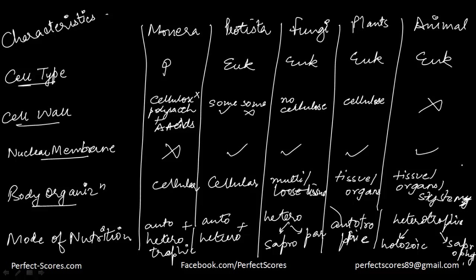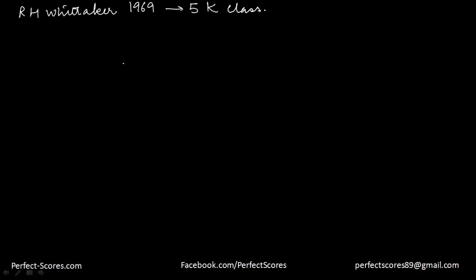You can pause this video and revise them once again. Now, who was the person responsible for the five kingdom classification? That was R. H. Whittaker. In the year 1969, he proposed the five kingdom classification. He thought that there are some organisms that don't fall clearly into either the plant kingdom or the animal kingdom, so you need more kingdoms. The main criteria he used for classification were cell structure, organization, nutrition, reproduction, and all that.